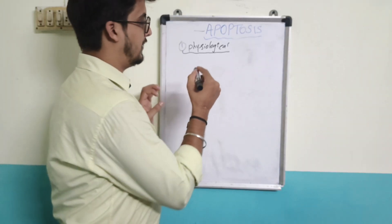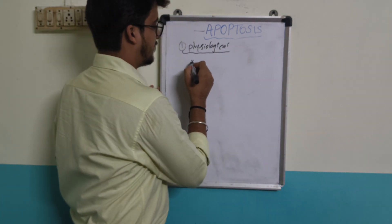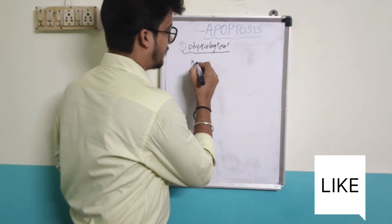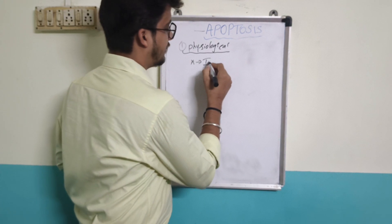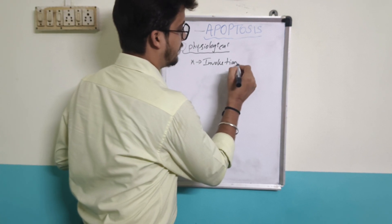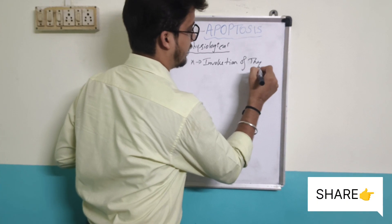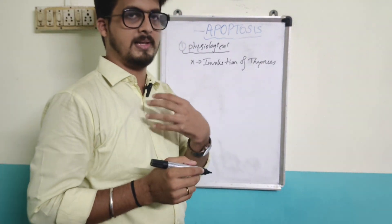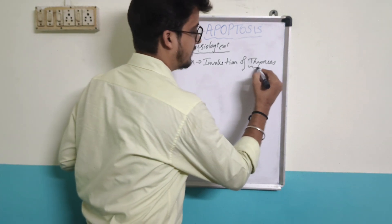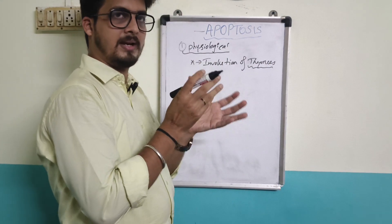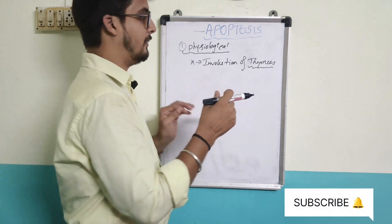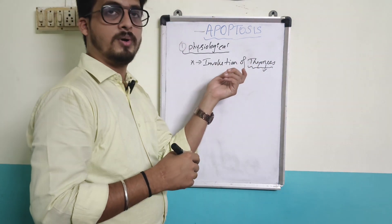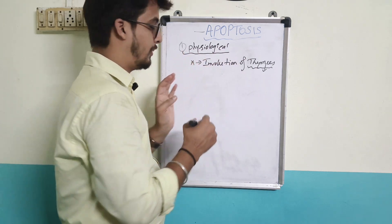The first one is physiological apoptosis. Physiological apoptosis — the first example is involution of the thymus gland. The thymus gland is located in the mediastinum, in the chest. That is one type of physiological apoptosis.